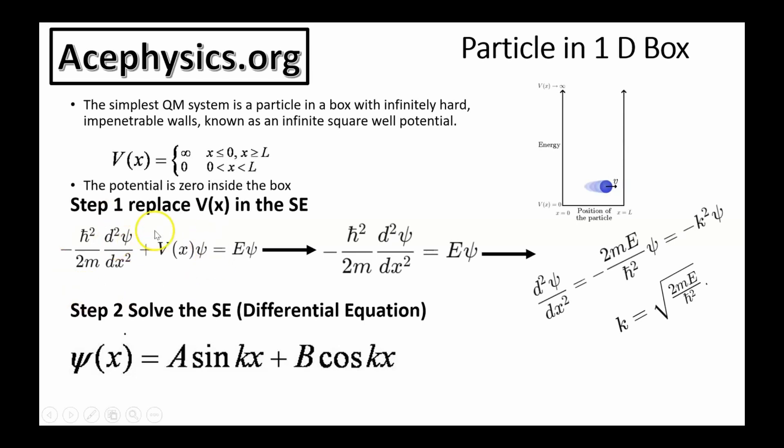This is an eigenvalue equation, and E is the energy of the particle. Once we've written down the Schrödinger equation, and we've defined the system, we replace the potential with whatever potential it is that we're looking at. In this case, the potential is zero within the box, so this term goes to zero, and this is the updated Schrödinger equation for this particular problem.